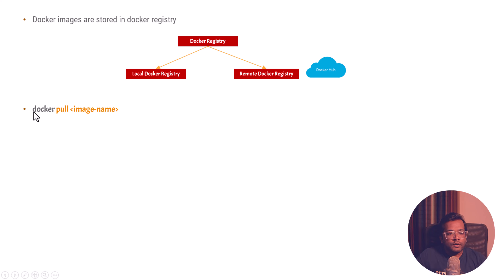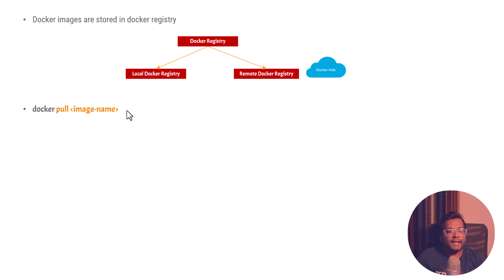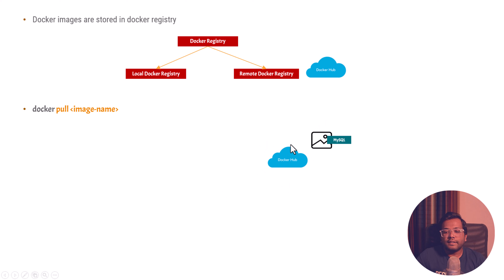We use the command 'docker pull' to basically download an image. As we learned in the previous video, a Docker image is identified using an image name and then a version or tag. So you can download a particular Docker image using the docker pull command and the image name. If you have not specified any tag, it will download the latest tag by default.